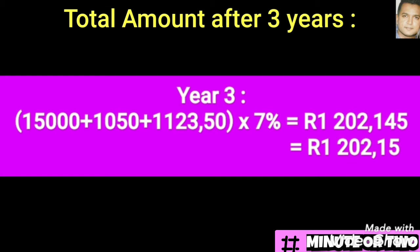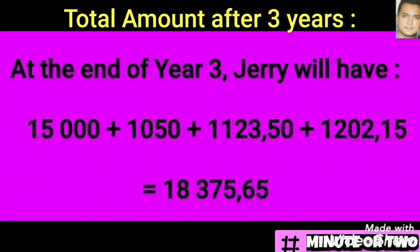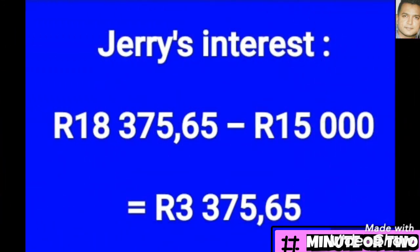To fully answer question one, the amount at the end of three years is the principal amount plus the three separate interests for each year, and I arrive at R18,375.65.